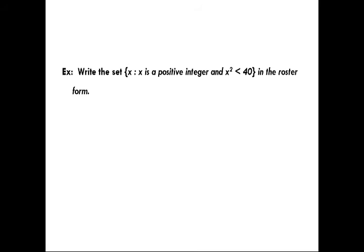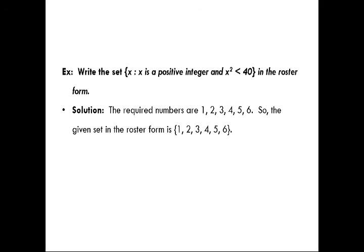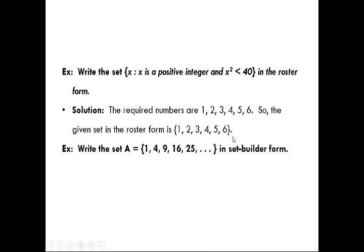Another example: write the set A = {x : x is a positive integer and x² < 40} in roster form. Since squaring the value of x must not exceed 40: 1²=1, 2²=4, 3²=9, 4²=16, 5²=25, 6²=36, but 7²=49 which exceeds 40, so 7 is excluded. Therefore the roster form is {1, 2, 3, 4, 5, 6}.